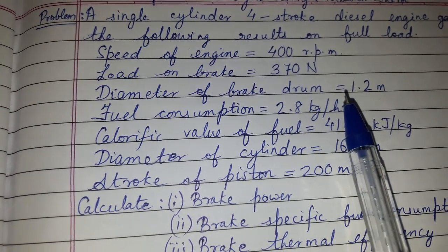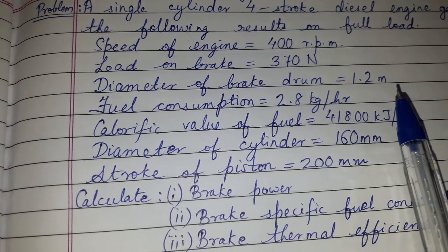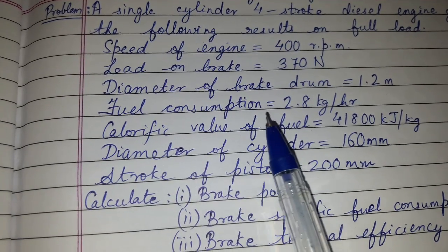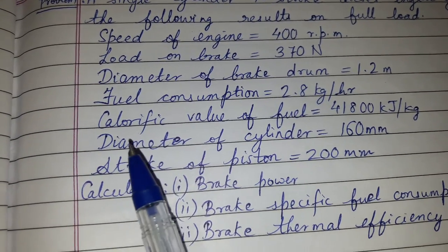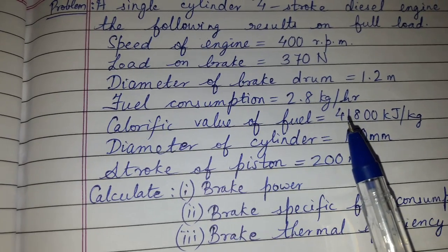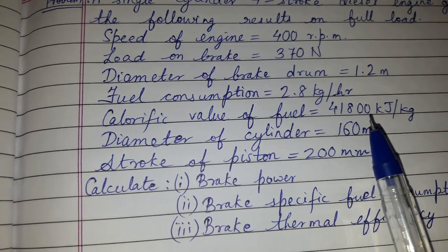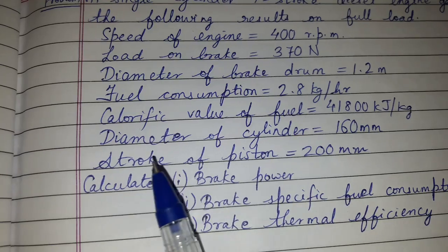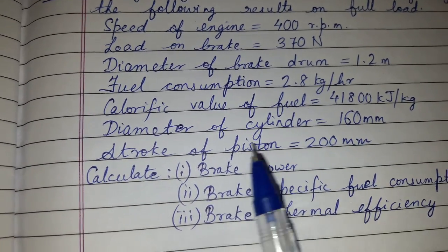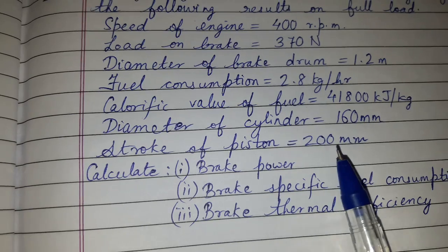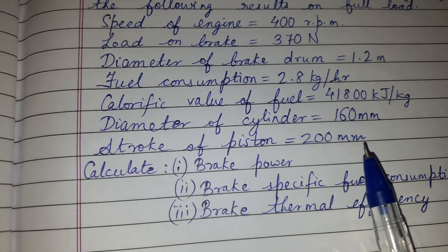Diameter of the brake drum, DB = 1.2 meter. Fuel consumption = 2.8 kg per hour, that is MF. Calorific value of fuel, C or CV = 41,800 kJ/kg. Diameter of the cylinder D = 160 mm. Stroke of the piston = 200 mm, that is L.